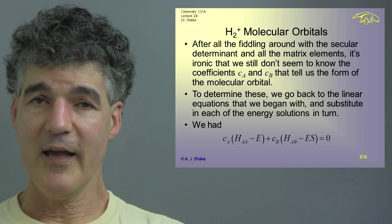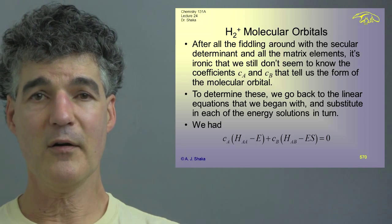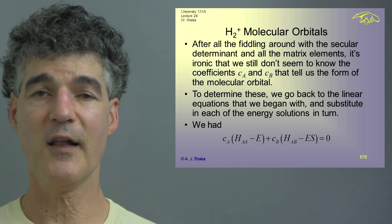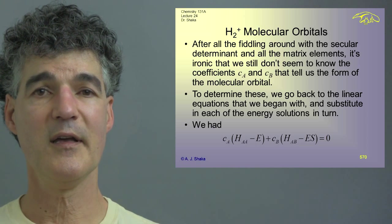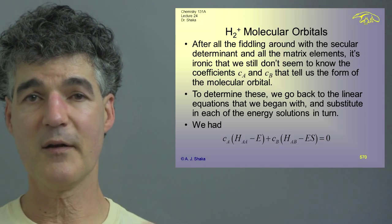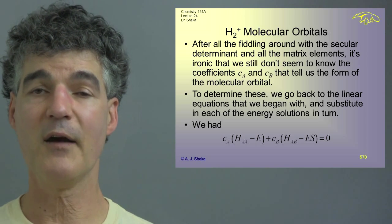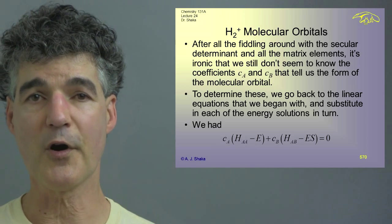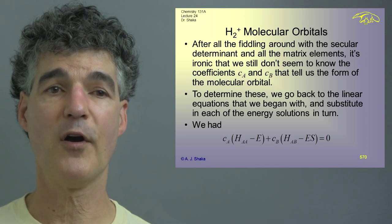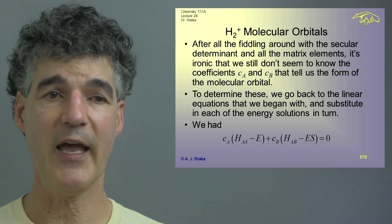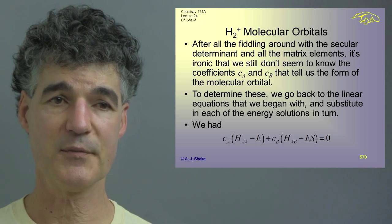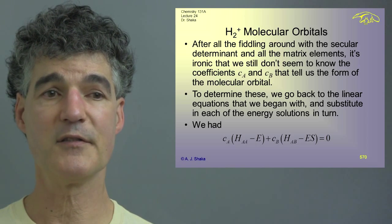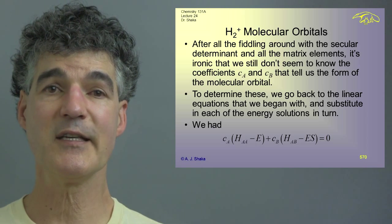After fiddling around with the secular determinant, we wanted to solve for the coefficients — the c's that tell us how much of 1sA and how much of 1sB is in the answer. We had a linear algebra problem: one answer for it to be zero is both c's are zero, which is a dud. The other answer is the secular determinant. Now we go back to our problem to figure out what these coefficients, which I'm going to call C_A and C_B, are.